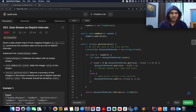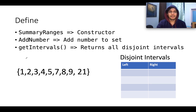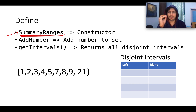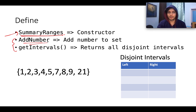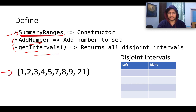Without further ado, let's move to the presentation where I'll explain the example and the algorithm. You need to define three methods: the first is a summary range constructor. This should make you think about what data structure would be apt for solving the problem — so never jump to defining the constructor unless you understand the rest fully. The add method adds elements to your data set, and get intervals should return all disjoint intervals present in the data set.